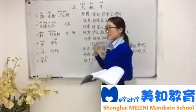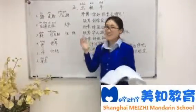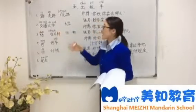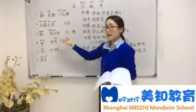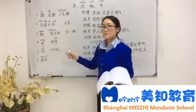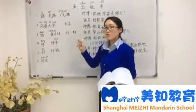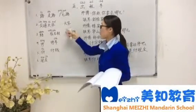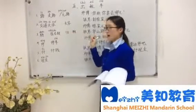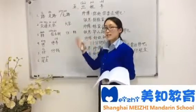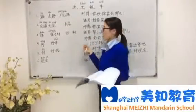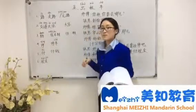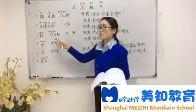Now look at me. 转. 往右转 means turn right. 往 means the direction of an action. 往左转 means turn left. 往右转. Next: 停. 停 means stop.